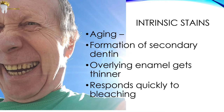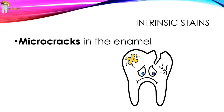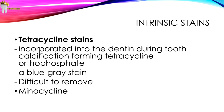The discoloration of teeth due to aging responds quickly to bleaching in most cases. Intrinsic stains can also be due to micro-cracks in the enamel or tetracycline medication. Tetracycline is incorporated into the dentine during tooth calcification, forming tetracycline orthophosphate, which causes discoloration. It can cause a blue-gray stain and is difficult to remove — only lightened. Tetracycline-stained teeth are the slowest to respond to bleaching. Minocycline, a drug commonly used in the treatment of acne, can also cause discoloration by getting deposited in the secondary dentin.